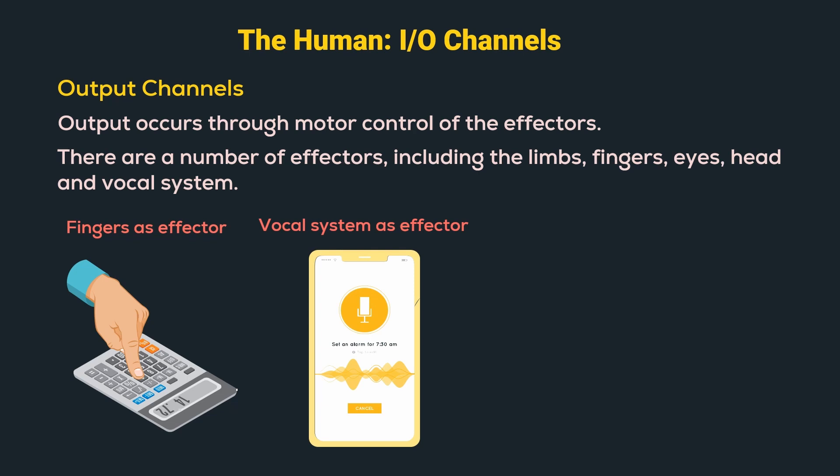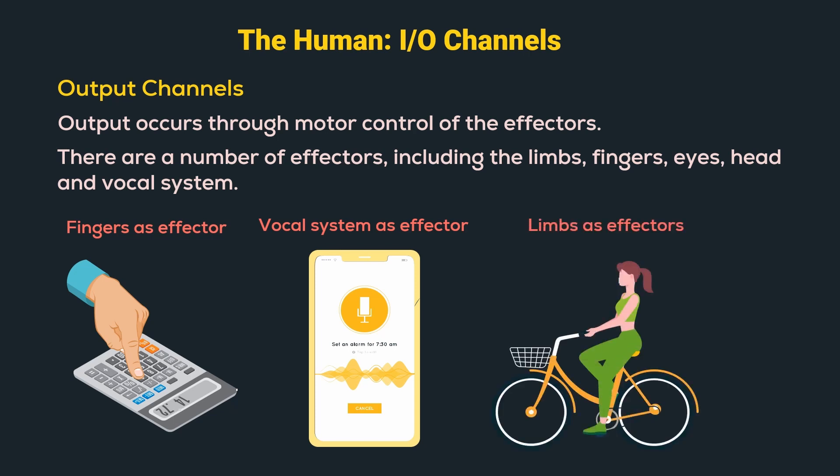The next is the vocal system as effector. For example, giving voice commands to our smart devices is one of the ways we use voice as input for the machine. Next are the limbs as effectors. Most of our actions require us to use our limbs, like riding a bicycle, using a vacuum cleaner, etc. We receive information using sensors and act on the environment or machine using motor organs or effectors.